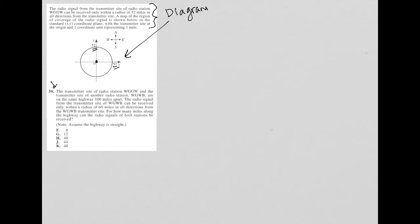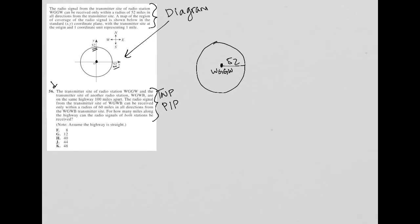Question 56 looks like it's going to be a word problem, just given the length of it. It says the transmitter site of radio station WGGW and the transmitter site of another radio station WGWB are on the same highway, 100 miles apart. So I'm going to treat that like a plug-in picture. Here I have WGGW, and then another site over here is WGWB, and the distance between these two transmitter sites is 100 miles altogether.